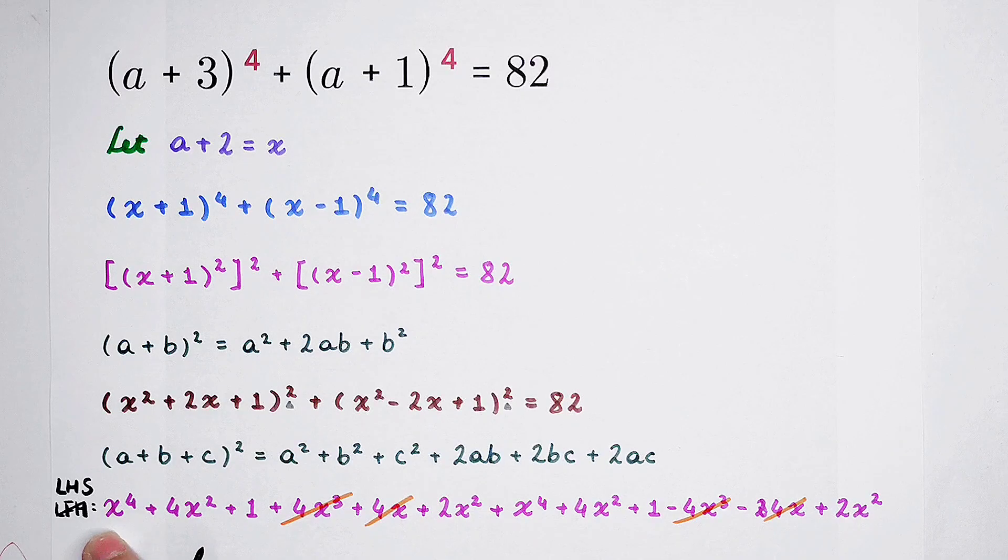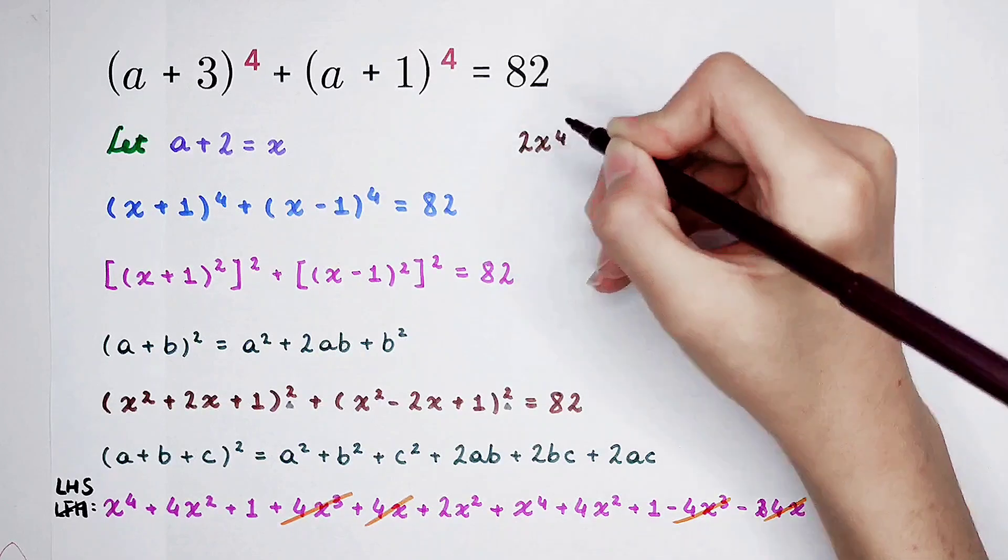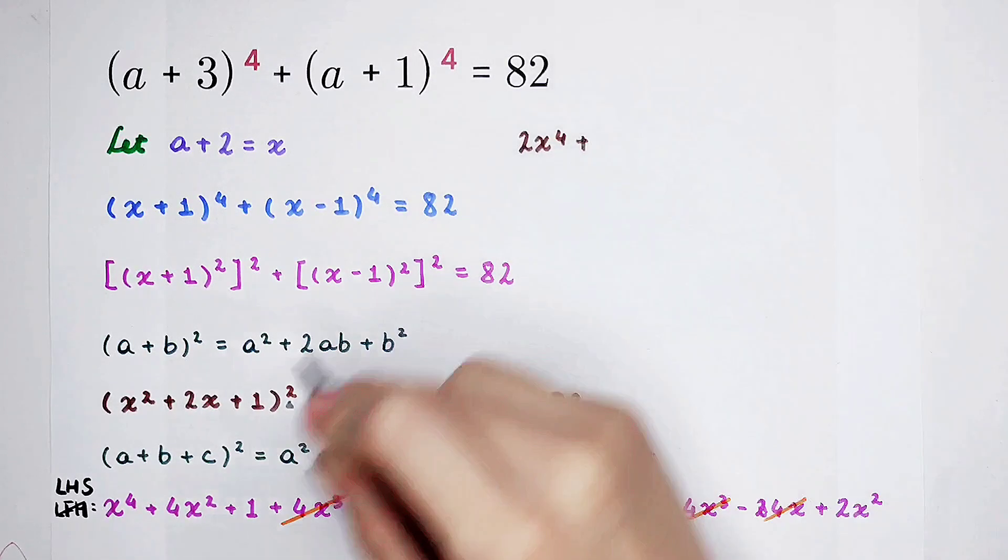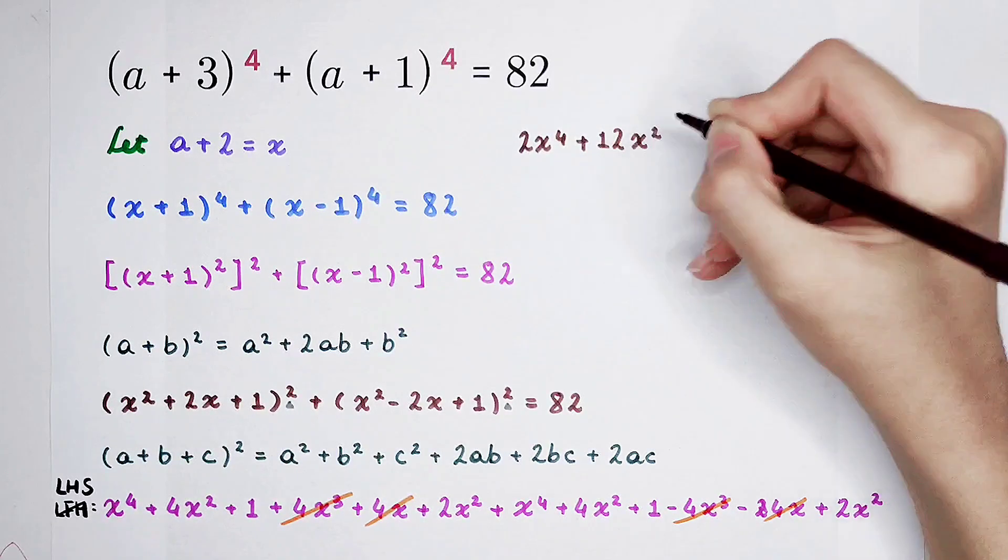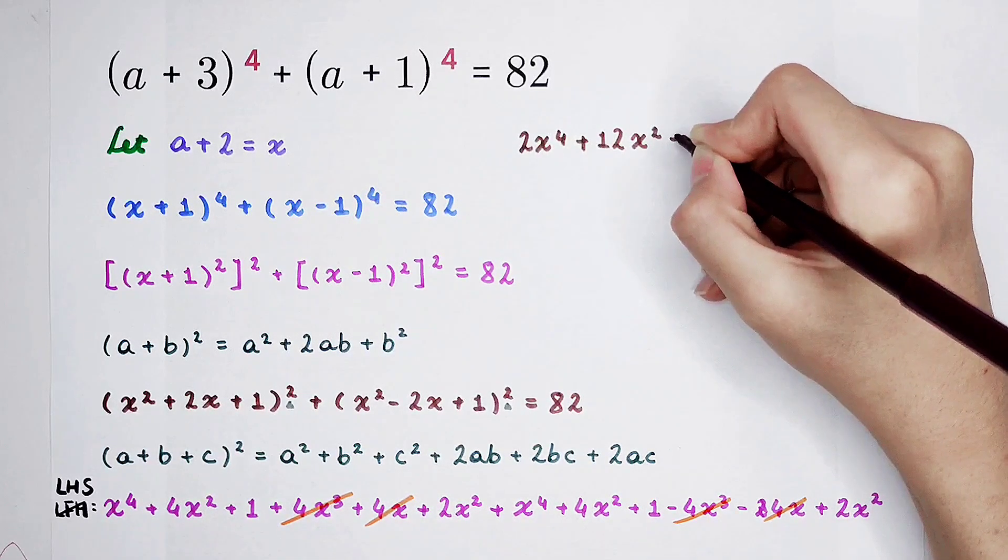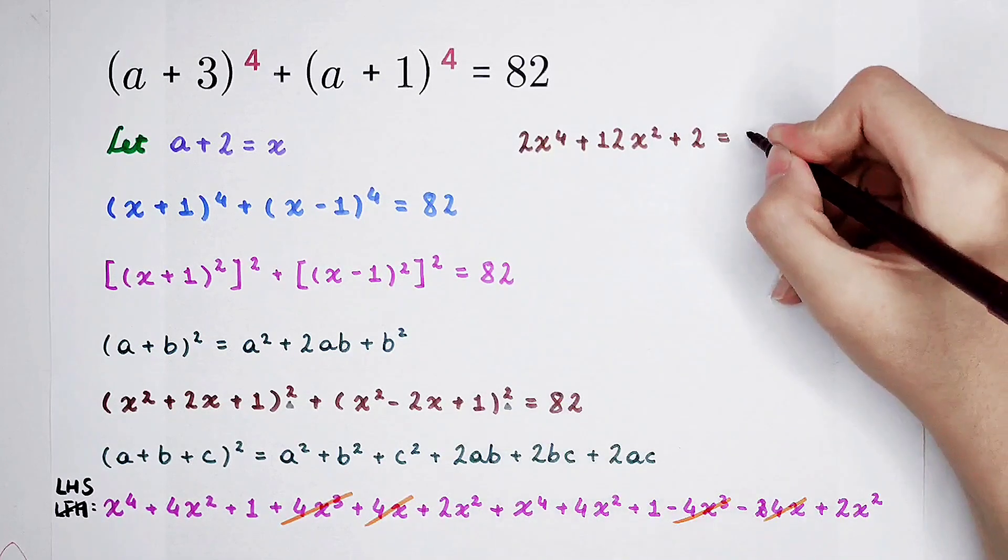The left side, which is x to the power 4, x to the power 4, 2 times. Plus, this is 12x squared. And then plus 2. It is equal to the right side, which is 82.